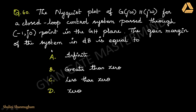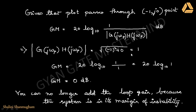Coming to the 60th question: the Nyquist plot of G(jω)H(jω) for a closed loop control system passes through the point (−1, j0) in the GH plane. The gain margin of the system in dB is equal to — they have asked to find the gain margin in dB. We know the formula for gain margin is 20 log(1 / |G(jω)H(jω)|) at the phase crossover frequency.